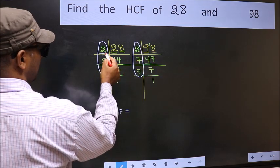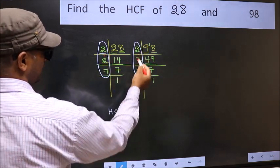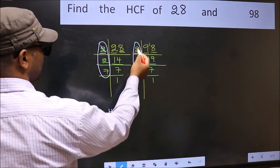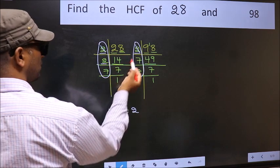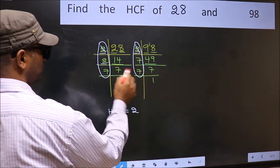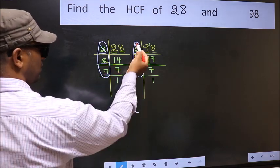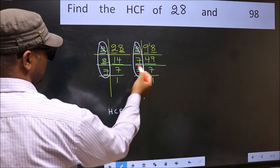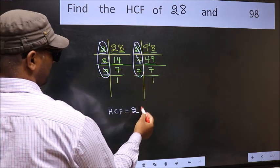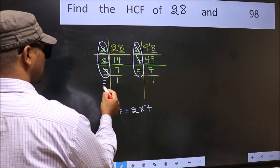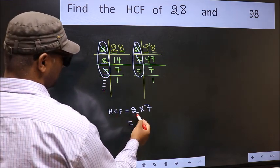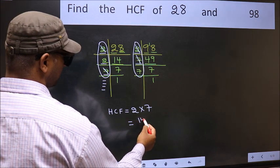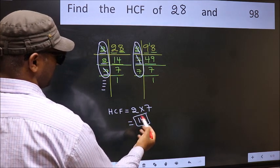Starting with the number 2. Do we have 2 here? Yes. So cut 2 right here. Next number 2. Do we have 2 here? No. Next number 7. Do we have 7 here? Yes. So cut 7 right here. No more numbers have been left out. So our HCF is 2 into 7, 14 is our HCF.